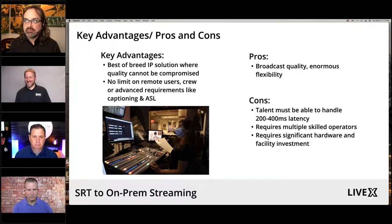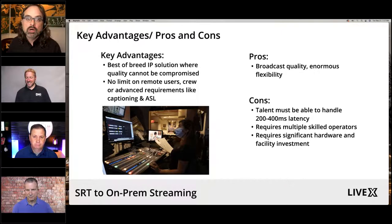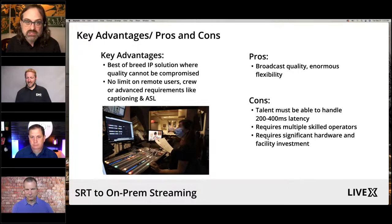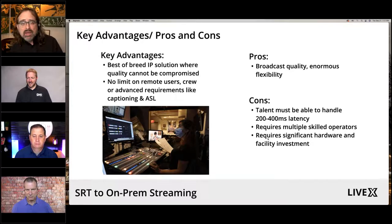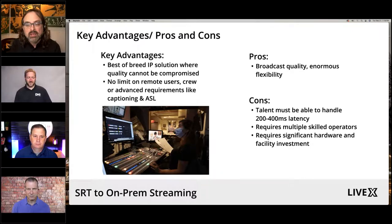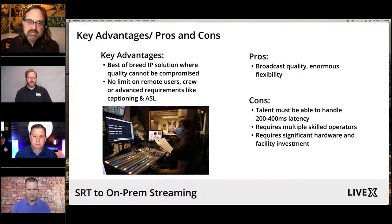The other con is it requires multiple skilled operators and communication, and requires significant hardware and facility investments. We love communication systems built for broadcast military like RTS or ClearCom — a ClearCom Eclipse matrix alone is $40,000. There are cheaper solutions like Unity that we use as well. This ultimately does have a significant hardware and facility investment, which is probably one of its biggest cons, besides the overall latency on the first mile when people have not-so-great internet.